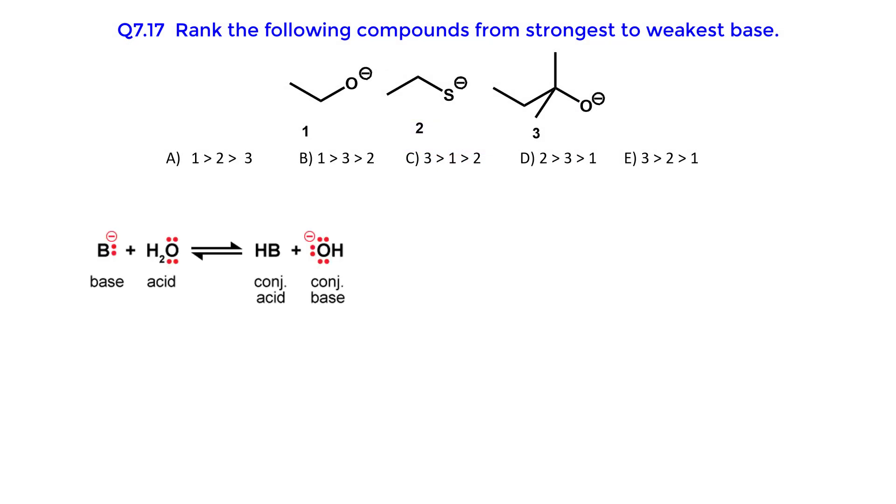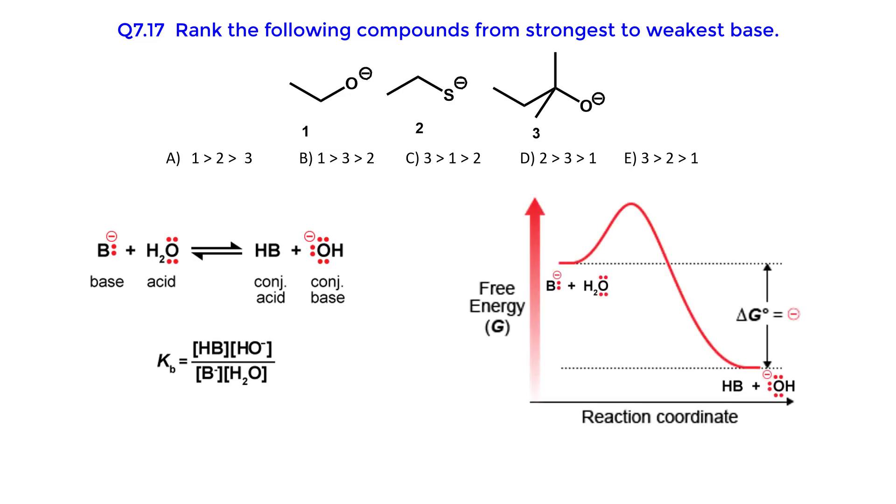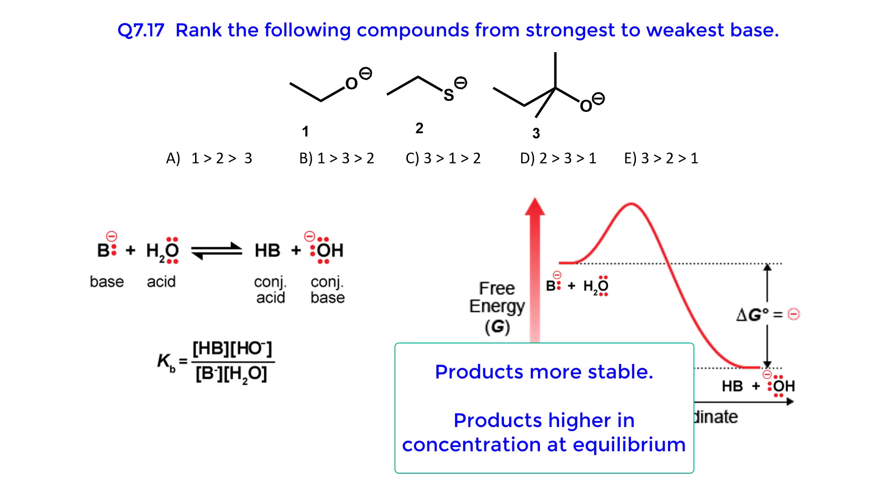Basicity is a thermodynamic property, measured by an equilibrium constant. The equilibrium constant does not tell you how fast the reaction will proceed, only the relative distribution of products and reactants once the equilibrium has been reached.